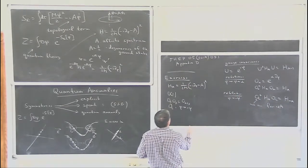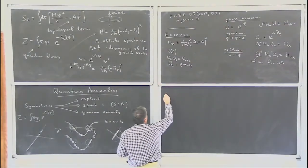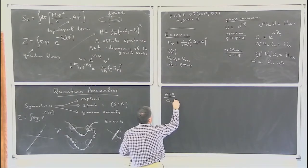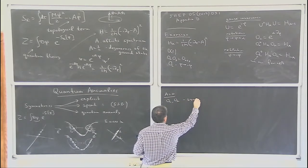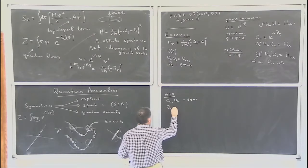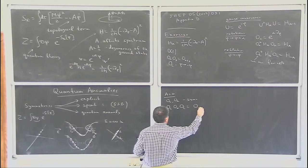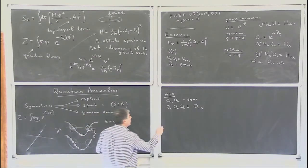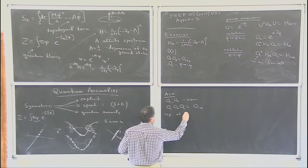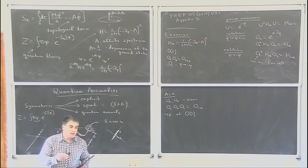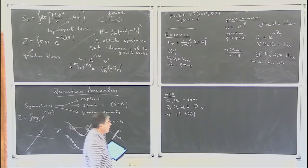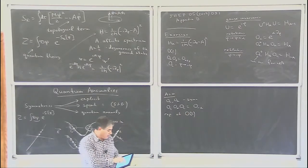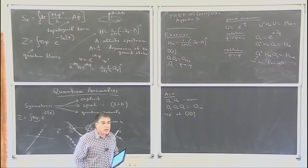Consider two special cases. If A equals zero, then O_C and O(alpha) are both symmetries, and O_C composed with O(alpha) times O_C equals O(-alpha). This is a representation of O(2), which consists of rotations and reflections — if you reflect, rotate by alpha, and reflect back, it's the same as rotating by minus alpha. So for A equals zero, no problems: you realize O(2) symmetry.